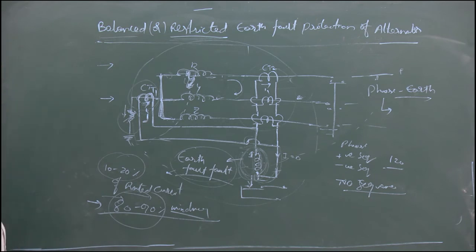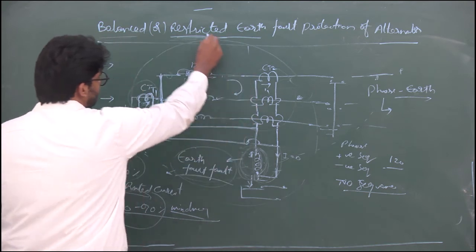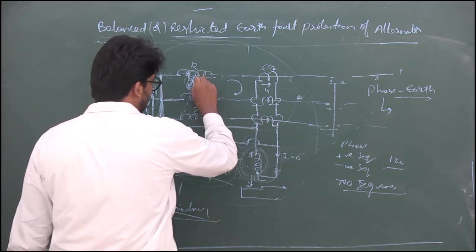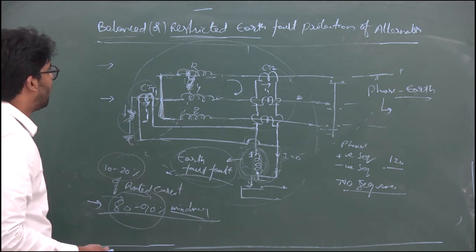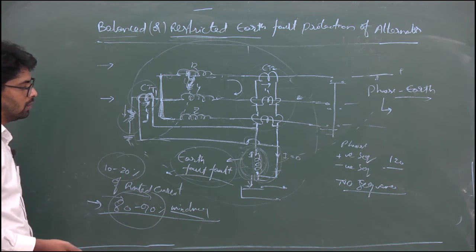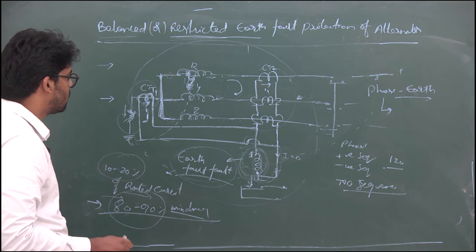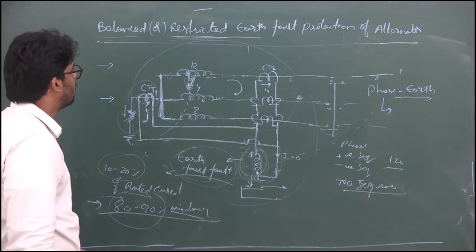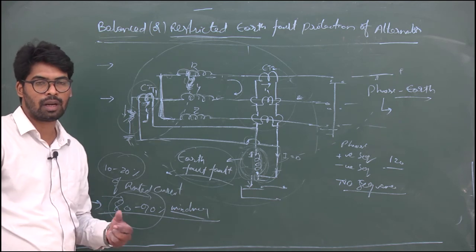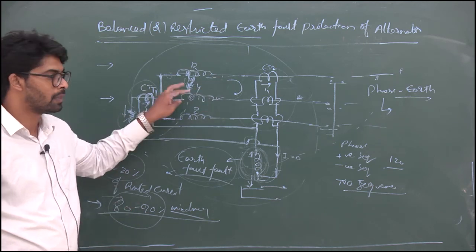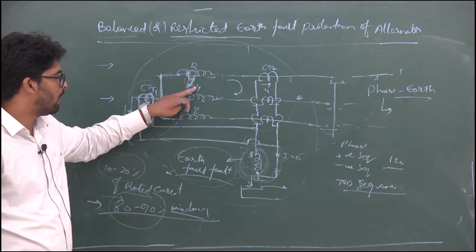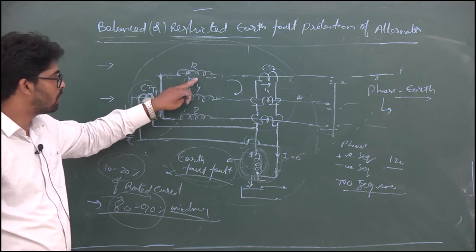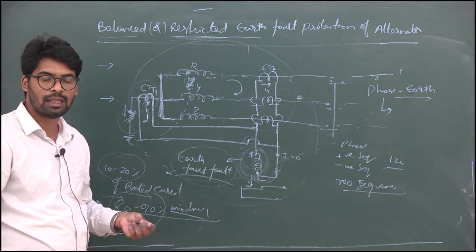This is about the balanced protection. Why we call it a restricted earth fault protection is because this operation — this fault — is only restricted to phase-to-earth fault. It will not operate for any other faults other than phase-to-earth fault, that's why it is named as balanced restricted earth fault protection. This is for small-scale, small generator applications only. In the next class, we will see the inter-turn fault — up to now we have seen faults occurring in the phases, phase-to-earth, phase-to-phase, external and internal, but we have not seen the fault occurring between the windings. We will see that in the next class. Thank you.